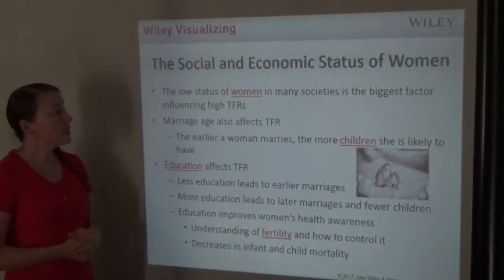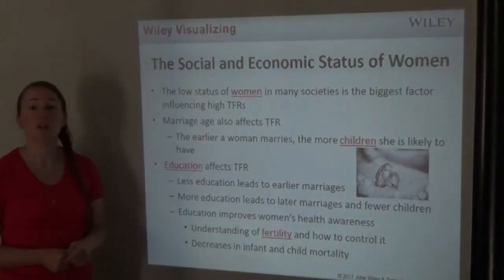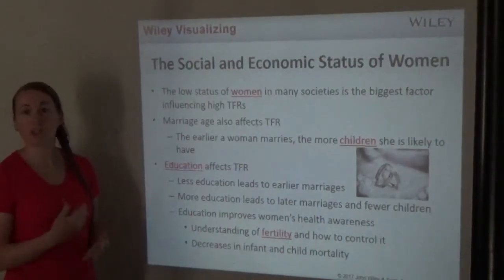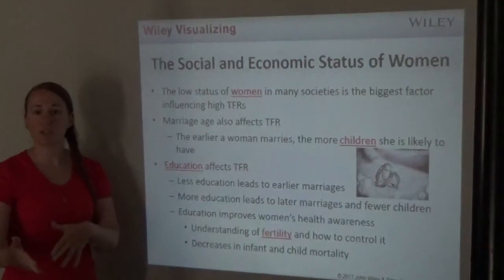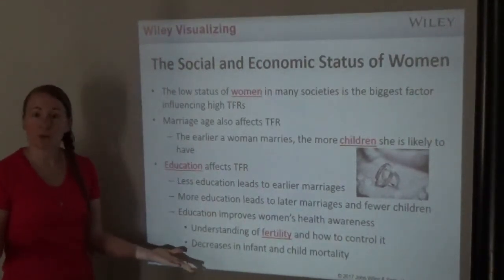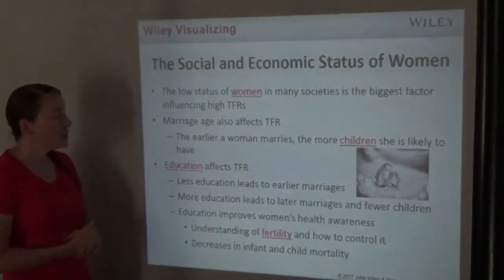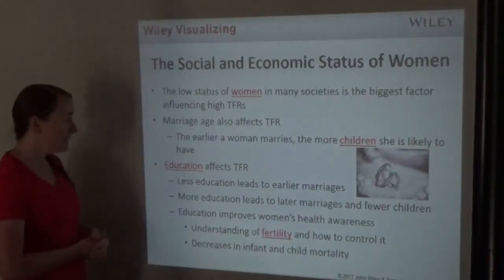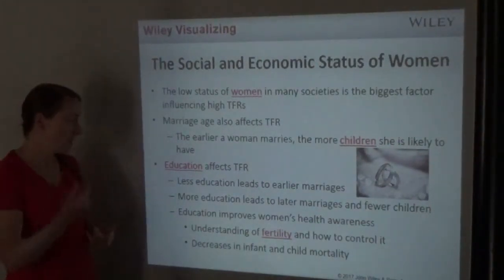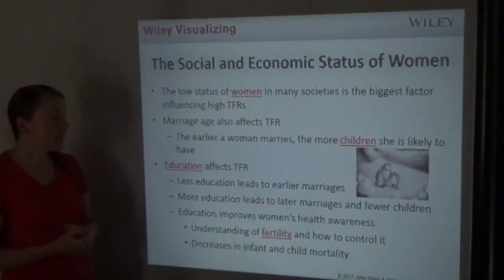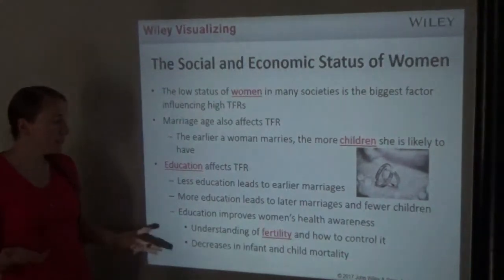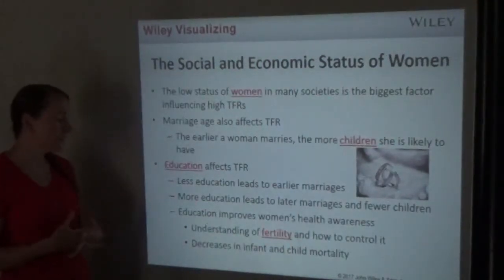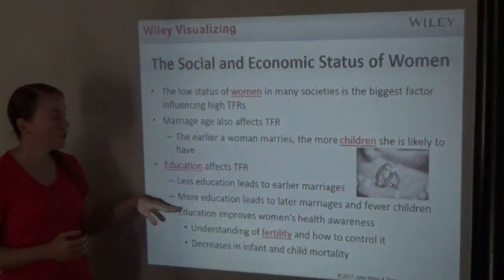Marriage age also affects total fertility rates — the earlier a woman marries, the more children she's likely to have. If a woman doesn't get to go to school, she's more likely to marry earlier, since many women wait until they're done with school. Education affects TFR too: less education leads to earlier marriages, while more education leads to later marriage and fewer children. Education also improves women's health awareness, understanding of fertility, and decrease in infant and child mortality.